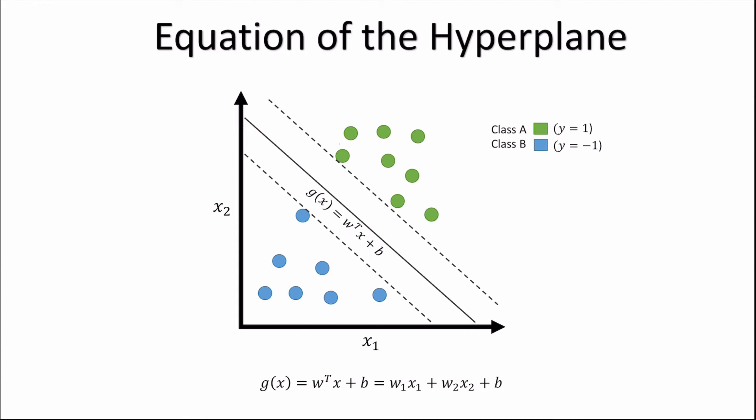So we're now going to label every data point that belongs in class A as y equals 1, and every data point that belongs in class B as y equals minus 1. So now essentially what we want our hyperplane to do is to predict a value of y equals 1 if any data point lies beyond this margin here,